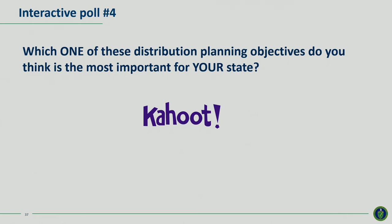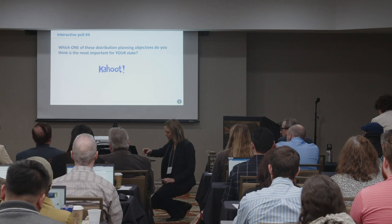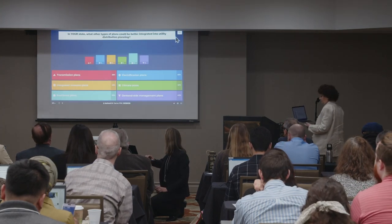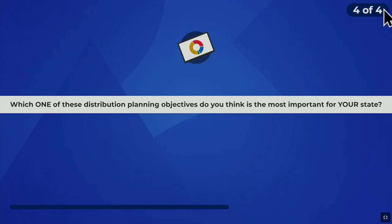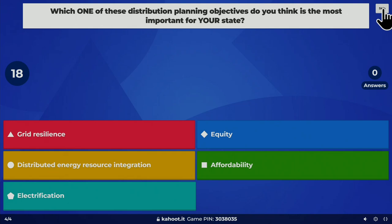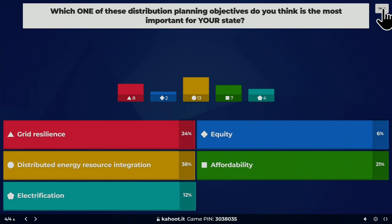We have another poll: which one of these distribution planning objectives do you think is most important for your state? DER integration was the winner, followed by resilience and affordability, with electrification and equity bringing up the rear.